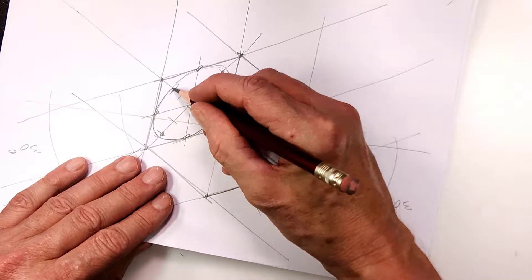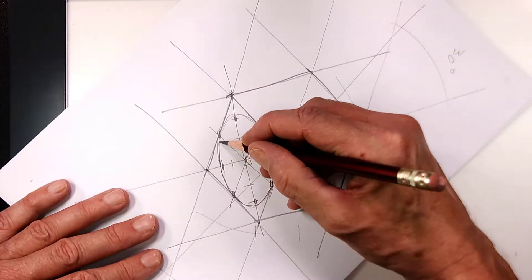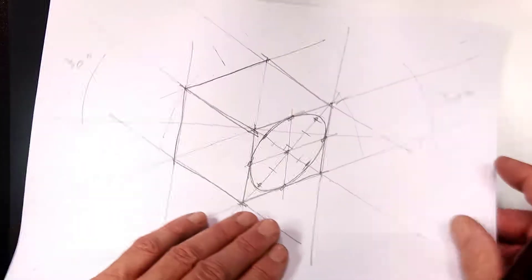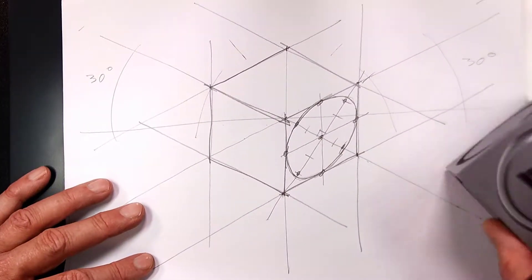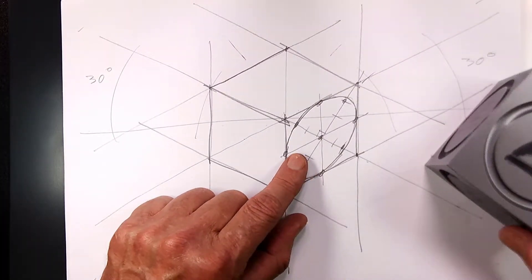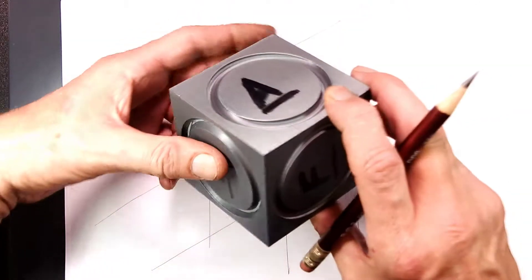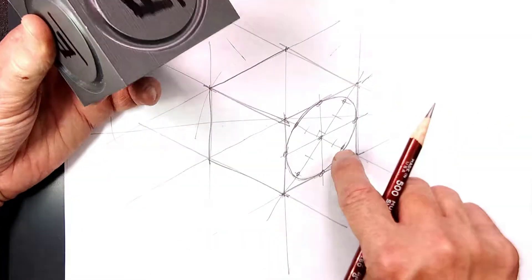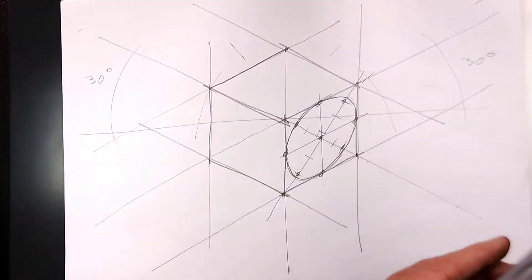I'm going to rotate the paper. And that is an ellipse that represents a circle. So in other words, if you were looking at the cube like this, you see the ellipse. That is the ellipse on the cube.